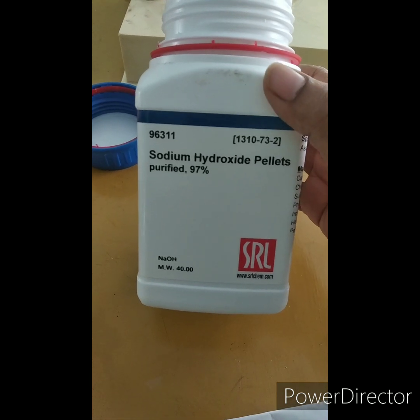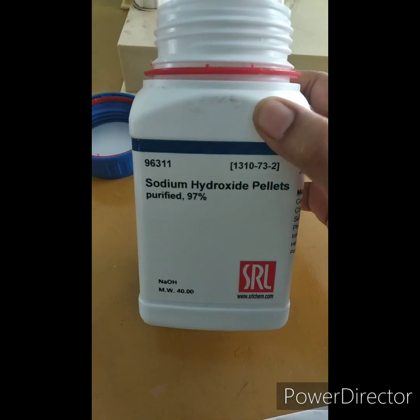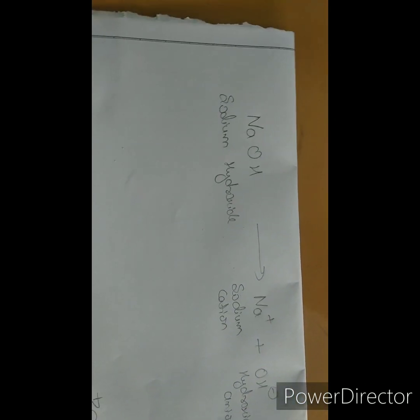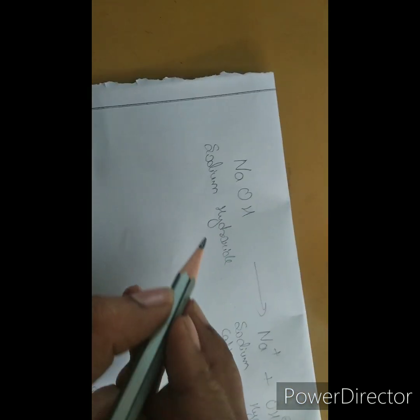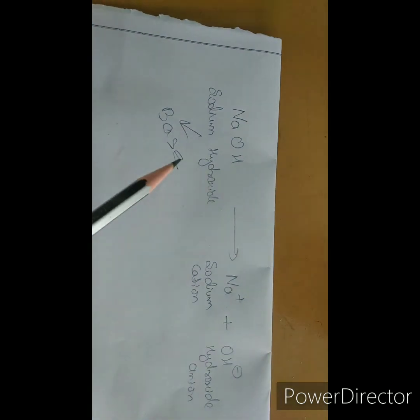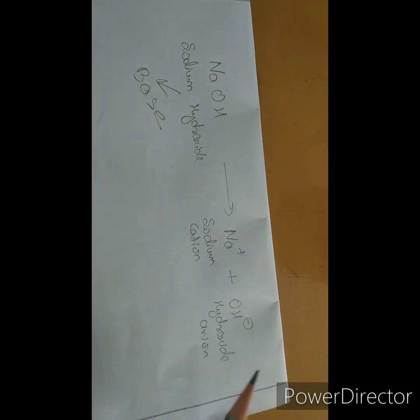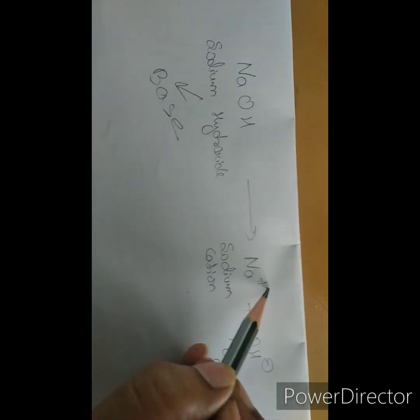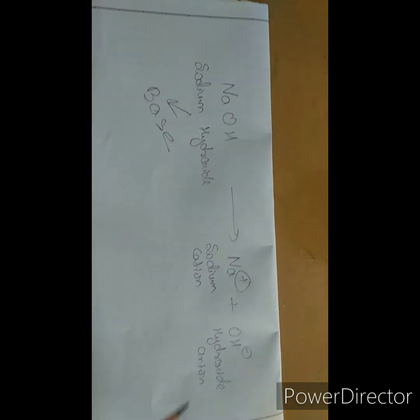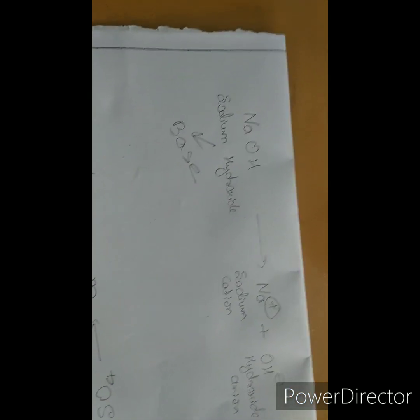Students, here we have sodium hydroxide, NaOH. It is a base. Sodium hydroxide, when dissolved in water, dissociates into sodium cation — which we identify with a positive sign — and hydroxide anion, with a negative sign.